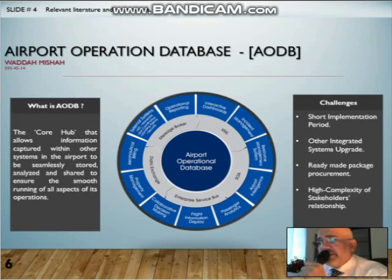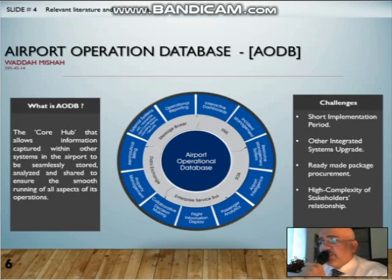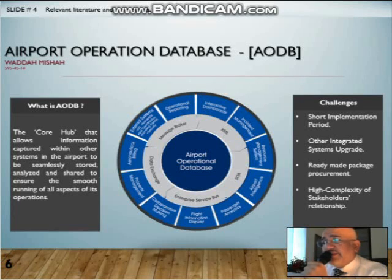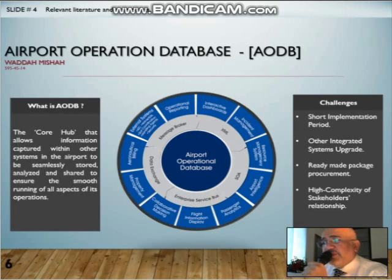The new AODB system was a ready-made package that differed significantly from the customized AODB built for Terminal 1 and Terminal 2 previously. The first challenge was the short timeline for delivering the full AODB system. There were several complicated systems that needed to be integrated with the AODB through integration layers, such as information management system, content visualization, resource optimization, charge calculation, situation awareness, and building intelligence.